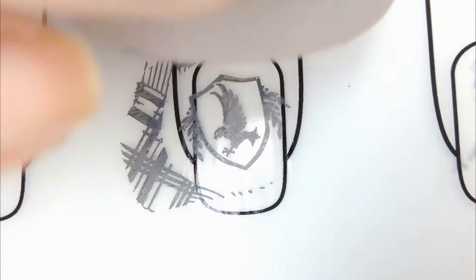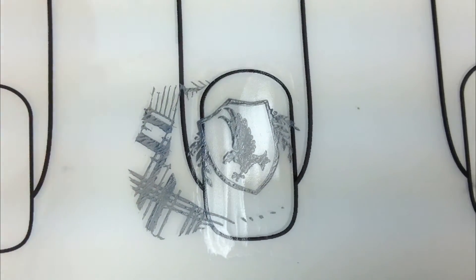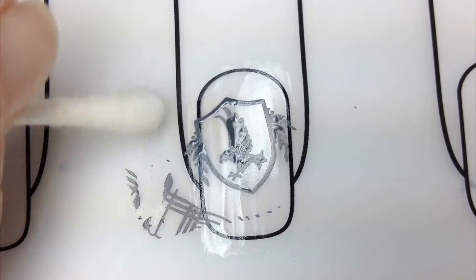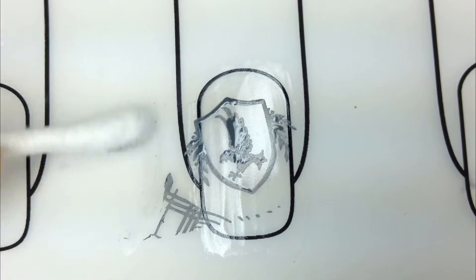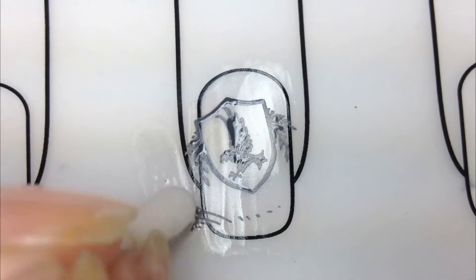Once the decal is fully dry I stamp on the Ravenclaw crest. And way to stamp it straight Cheyenne. While the stamp is drying I go around the edges with a q-tip and acetone to remove any decal that I won't be using. This way I don't have to do as much cutting before applying it to my nail.